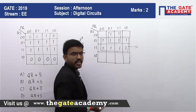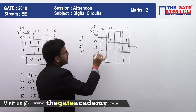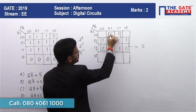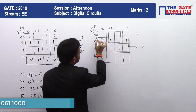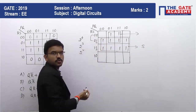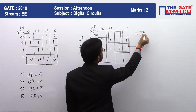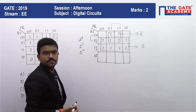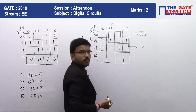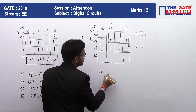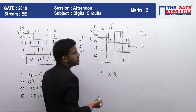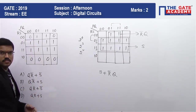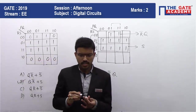From the first grouping, in these 2 rows, S value is 1, so we get S. For the second grouping, in these 2 rows, R value is 0, so we get R-bar; and in these two columns, Q value is 1, so we get Q. The minimized expression is S plus QR-bar. That means Option B — QR-bar plus S — is the correct answer.